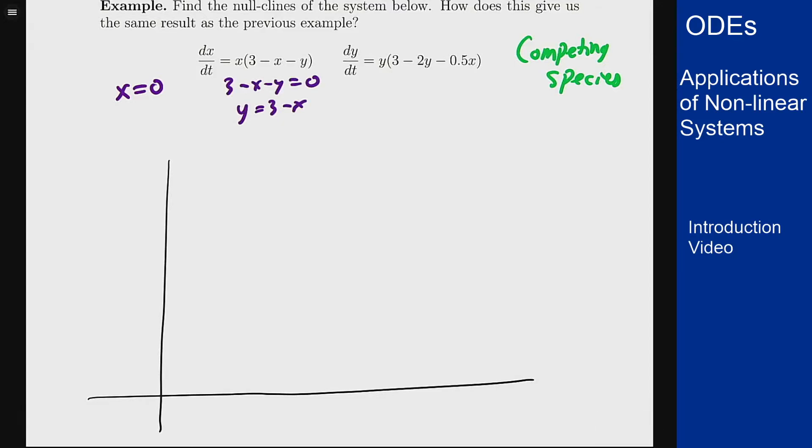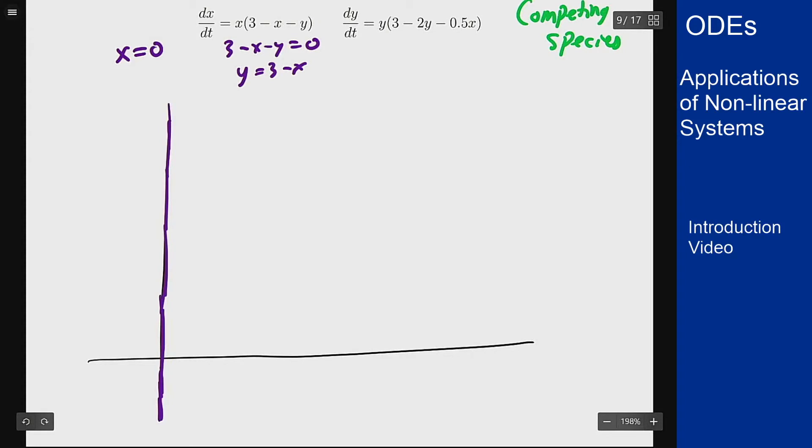So x equals 0, that's the y axis, and y equals 3 minus x. That's going to be a sloped line that hits at 3 and 3.